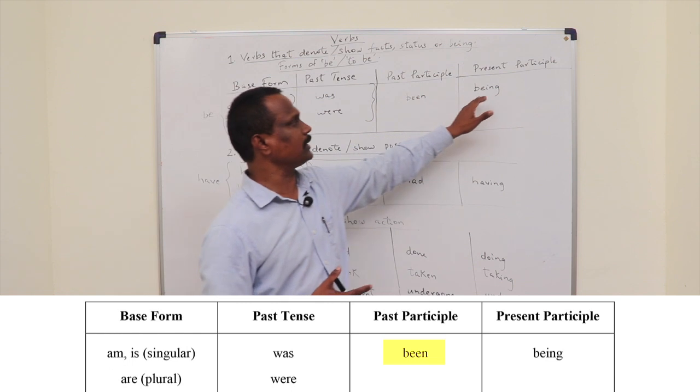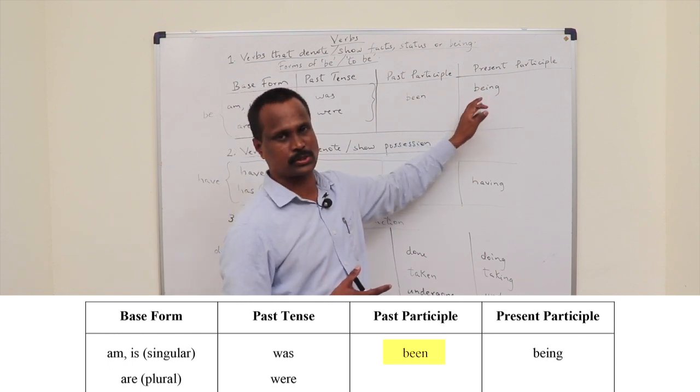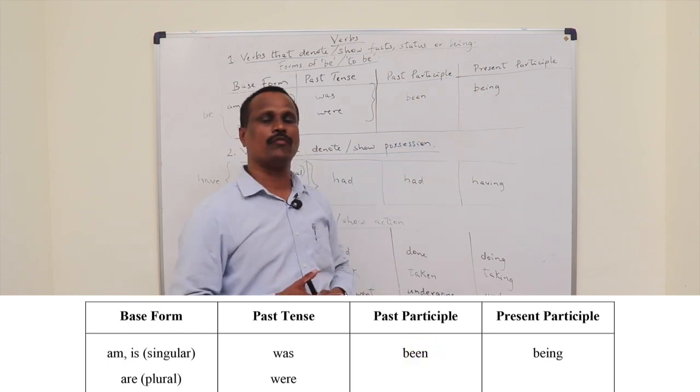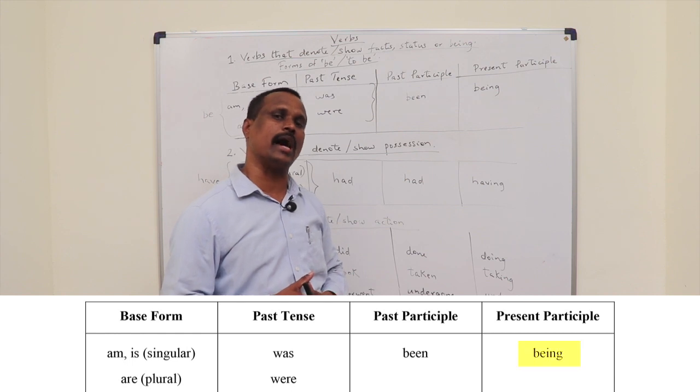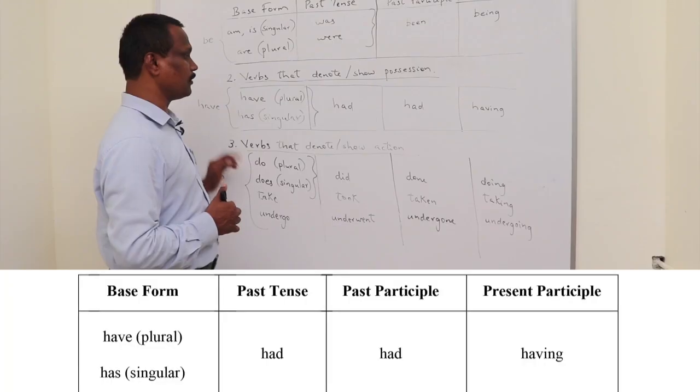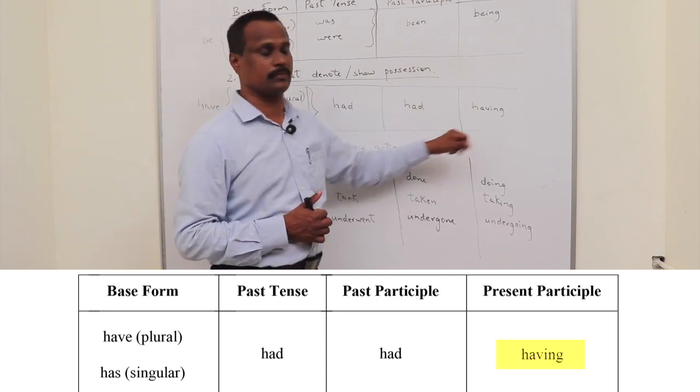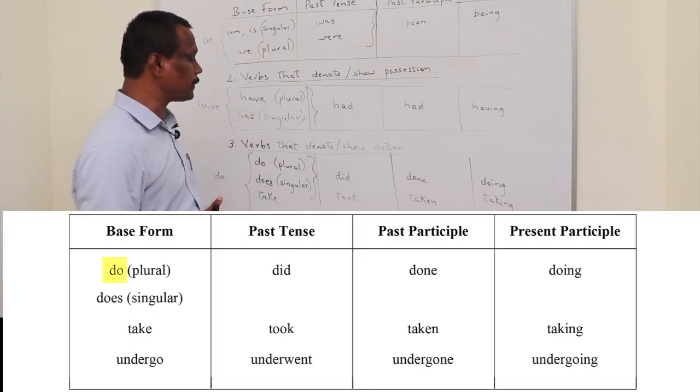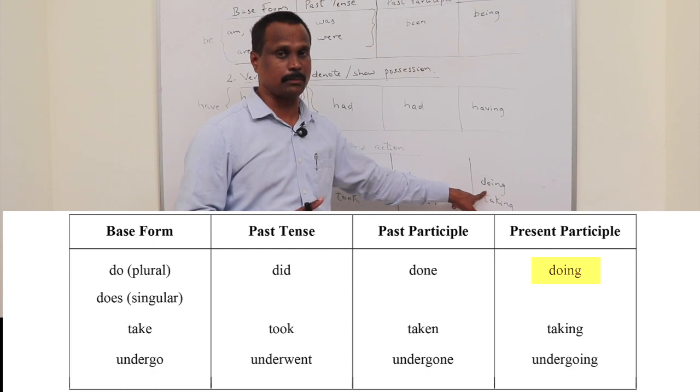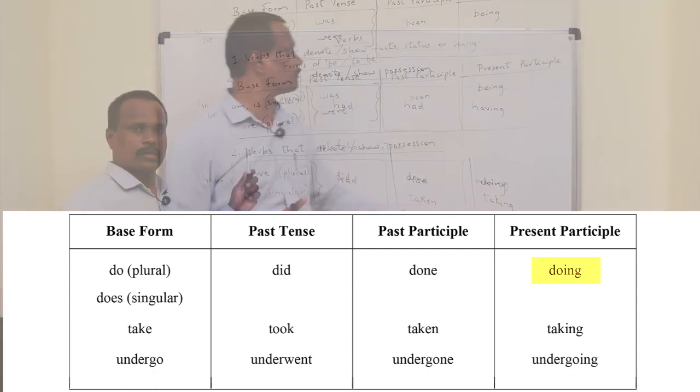And there is one thing common about present participle. That is, for all the verbs, it is the ing form. For example, if here have is the verb, having is the present participle. And if do is the main verb, doing is the present participle of the same.